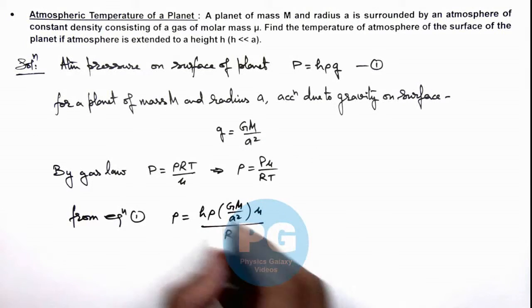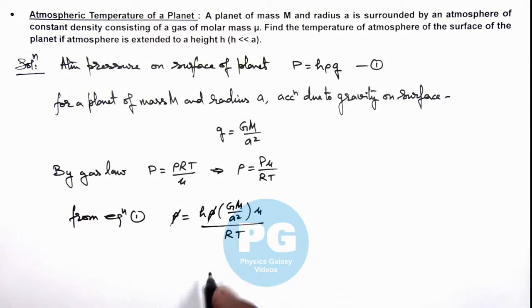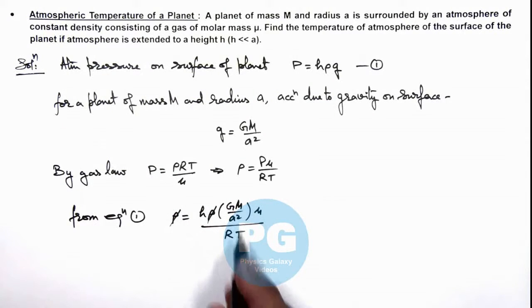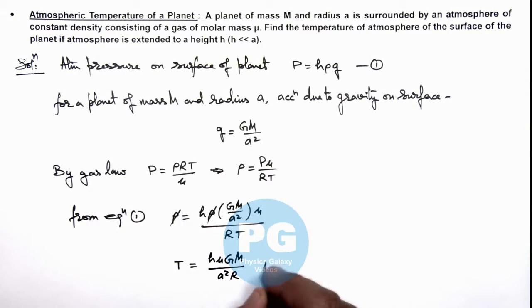And here the ρ gets cancelled out. In this situation, we are cancelling ρ because we are assuming constant density. So here the value of atmospheric temperature we can give as T = hμGM/(a²R). That is the result of this problem.